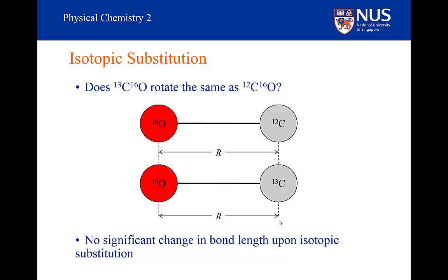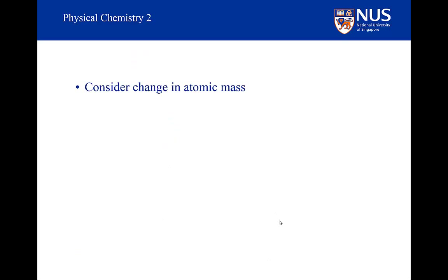That means that if the bond length stays the same, then the reason why we will see different rotational spectra is because the reduced mass is clearly different. The reduced mass won't be the same, and so the rotational constant will be different, and so the spacing between the lines will be different.